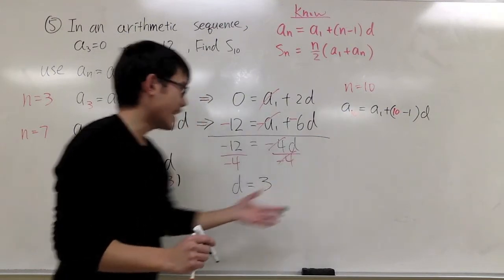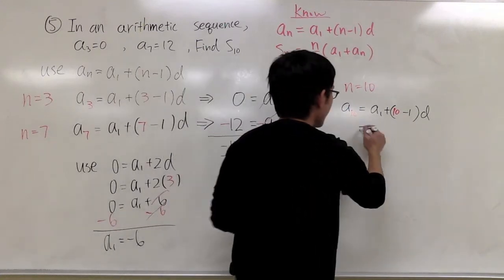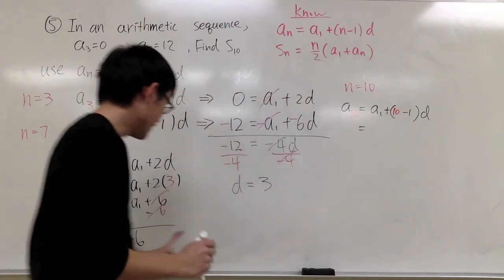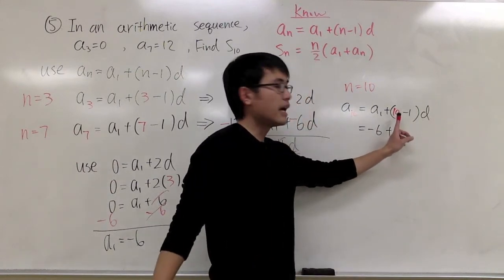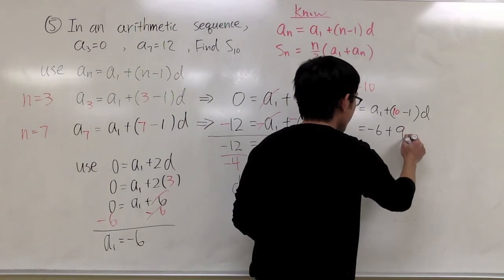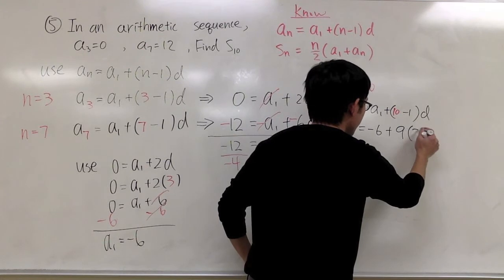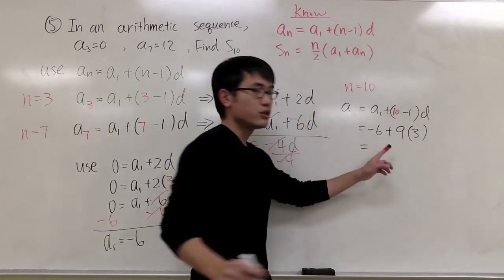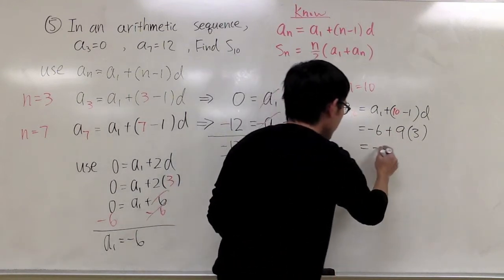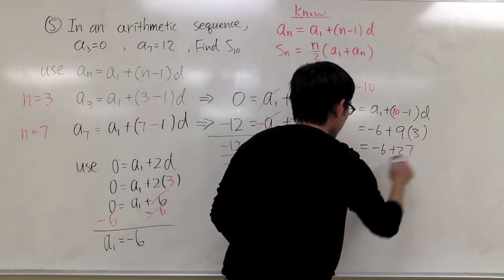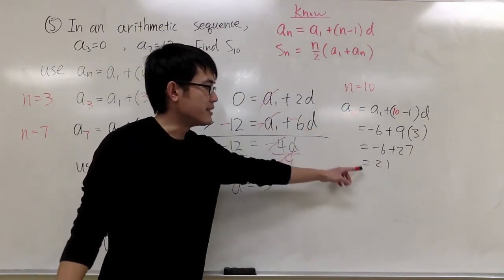We have everything we need. a1 is negative 6, and n − 1 is 10 minus 1 which is 9, and d is 3. So 9 times 3 is 27. Negative 6 plus 27 gives us 21. So a10 is equal to 21.